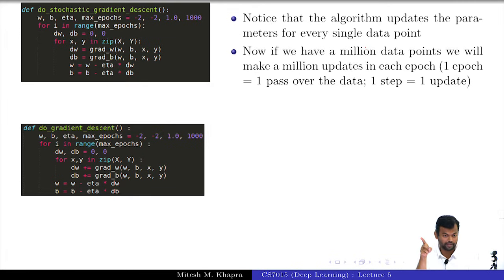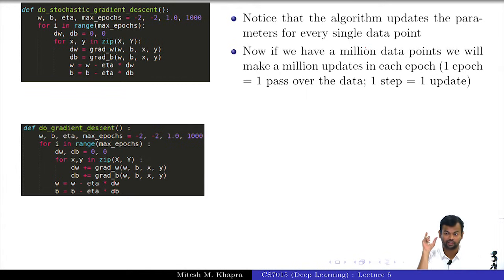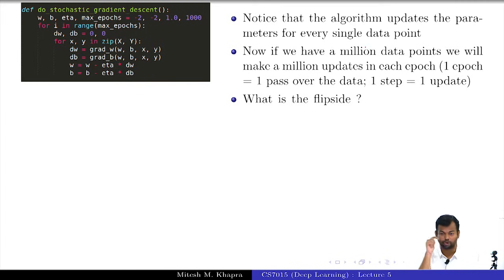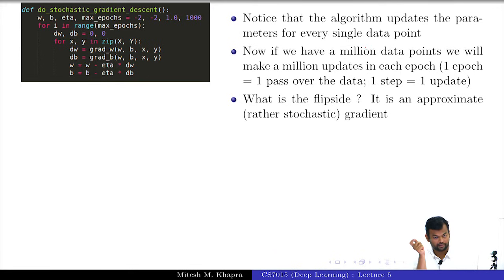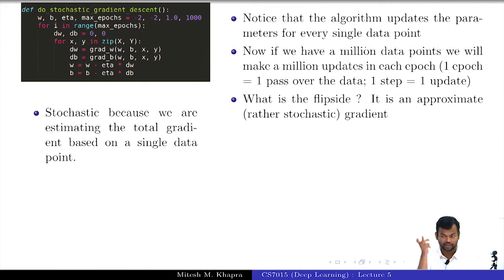If you have a million data points, how many updates will we make in one pass over the data? A million — for every data point we make an update. That addresses the slowness factor of batch gradient descent, where you look at the entire data and make one update. The flip side is that these are not the true gradients. The true gradient is a summation over all points — this is just a point estimate, an approximation of the gradient.